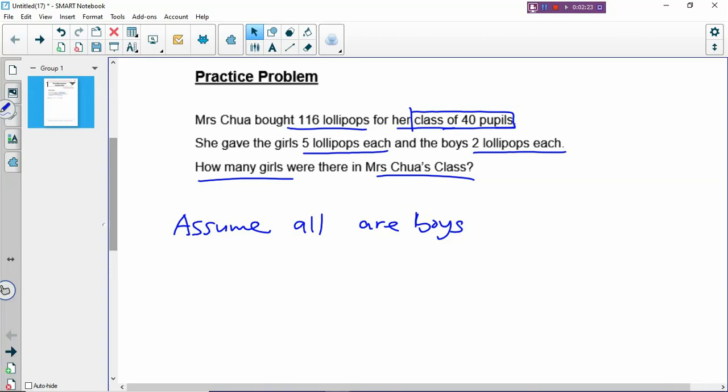Assume all are boys. All the 40 pupils will be boys, which means all the boys will get 40 times 2. They will get 80 lollipops altogether, which is not true because the total lollipops that Mrs. Chua bought is 116.